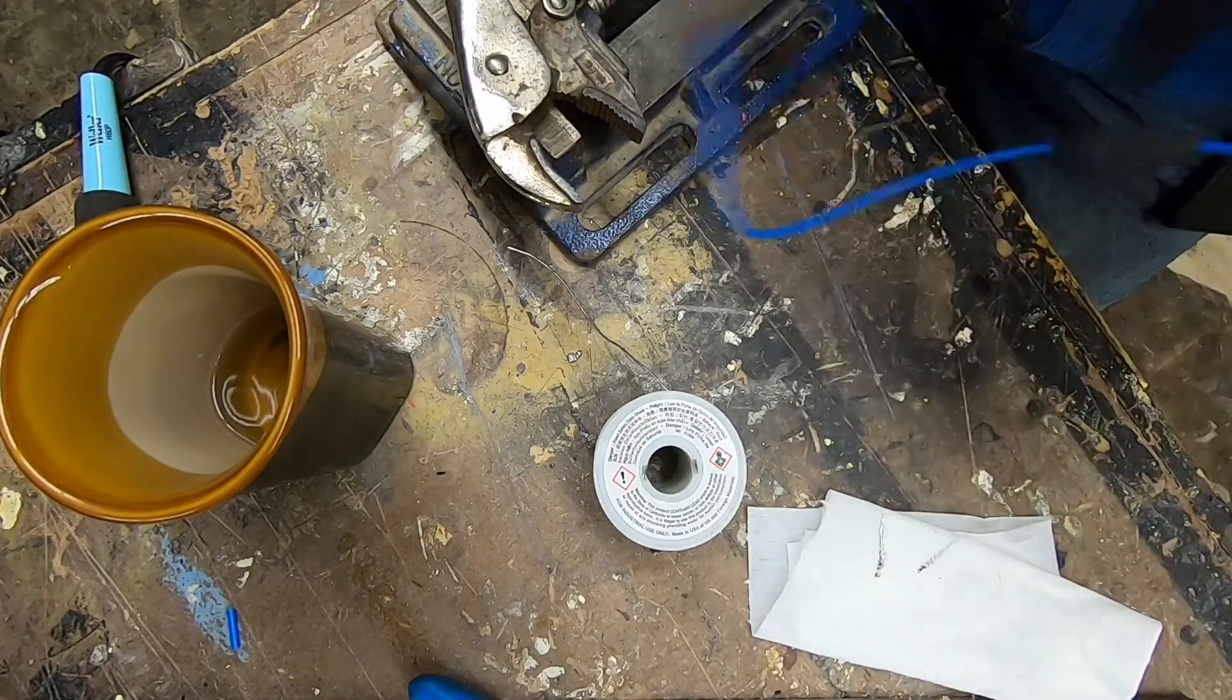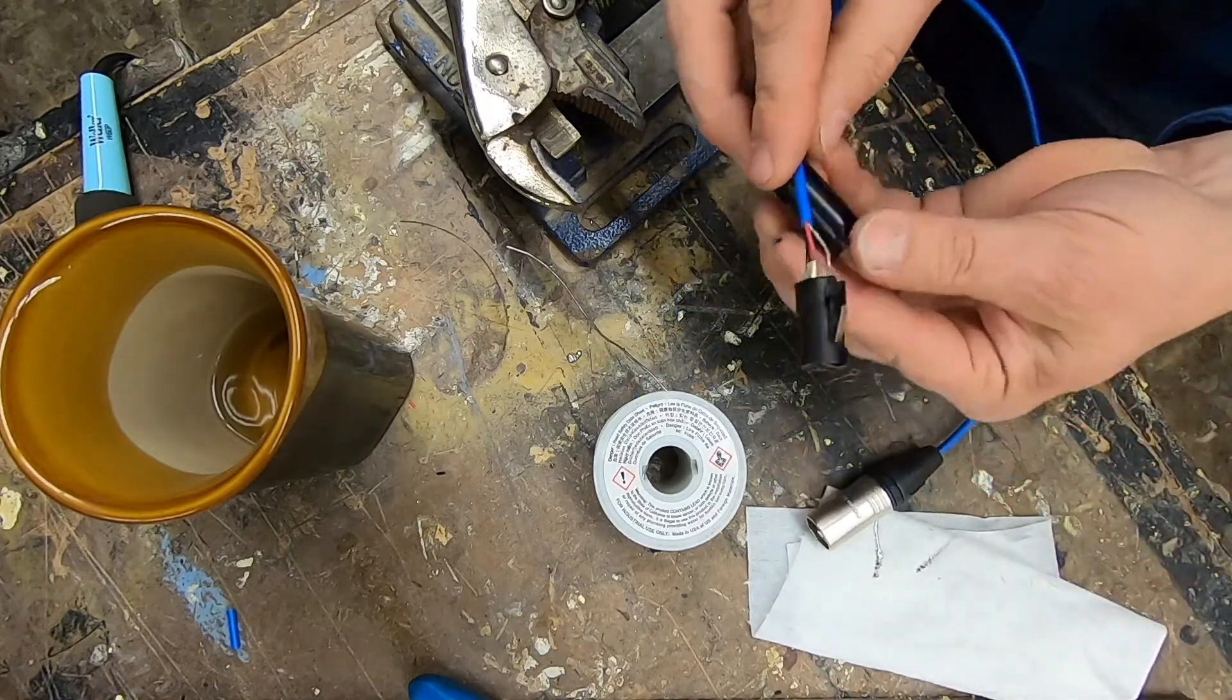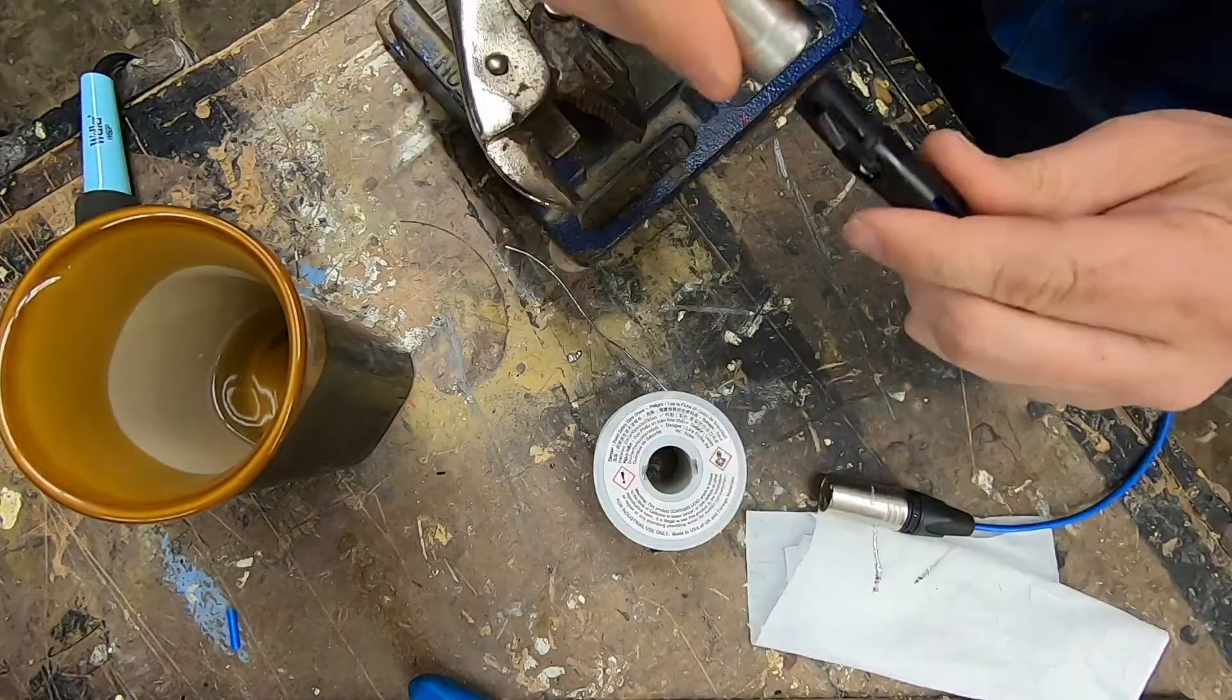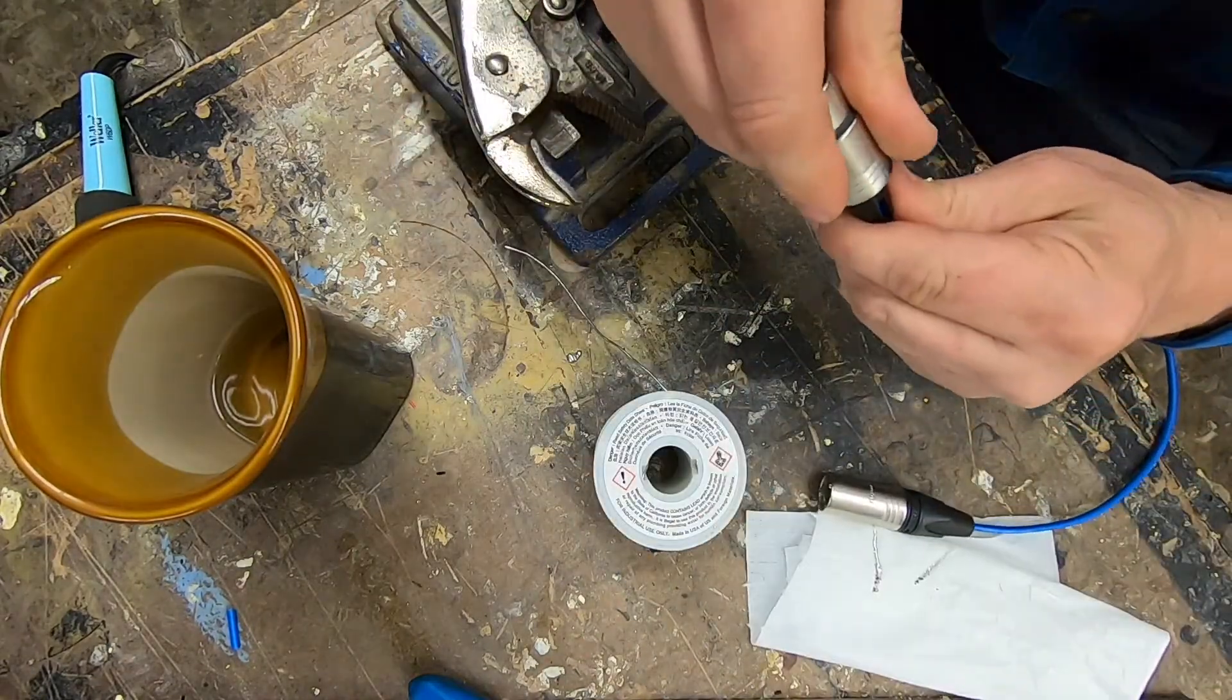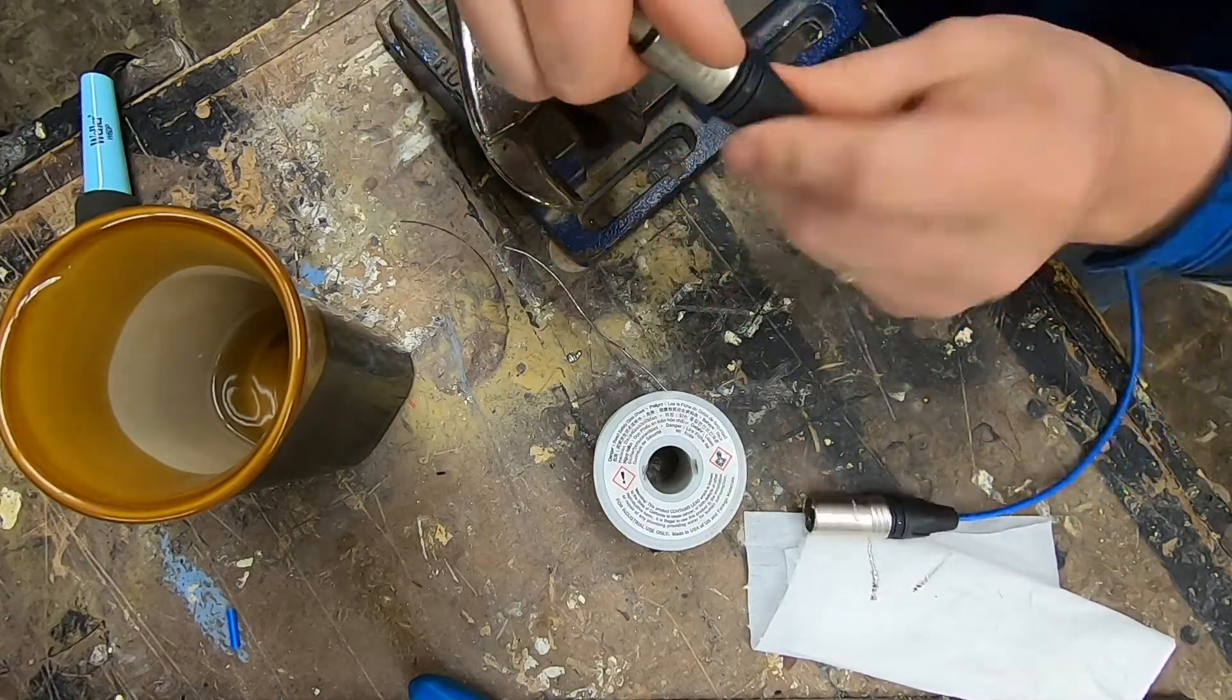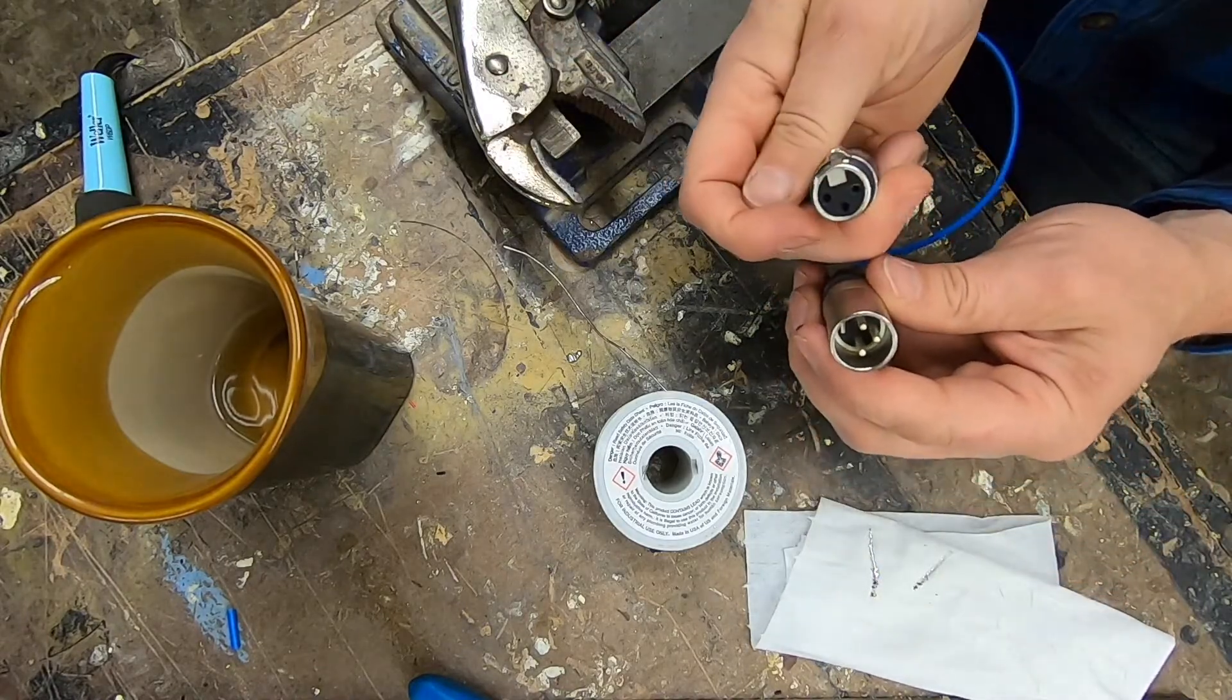So with the bushing already on, we're going to slide the chuck over, key it up, housing, and then lock the bushing in place. That simple.